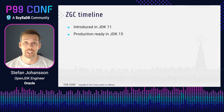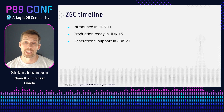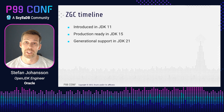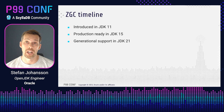A quick look at the ZGC timeline as well: ZGC was introduced in JDK 11, about five years ago. It was then made production ready two years later in JDK 15. And now with JDK 21 we're adding generational support to ZGC. What do we really mean with generational support? Well, in most cases newly allocated objects are just used for a short period of time before being considered garbage, and this is often referenced as the generational hypothesis. When doing generational garbage collection we make use of this fact by dividing the heap into two generations: one for newly allocated objects — the young generation — and one for objects that survived a few GC cycles — the old generation.